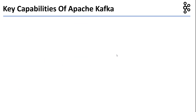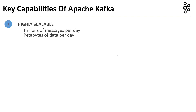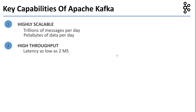Let's look at the key capabilities of Kafka. One, Kafka is highly scalable. Kafka clusters can be scaled to process trillions of messages per day and petabytes of data per day. Two, Kafka is highly performant. Messages can be delivered with latency as low as two milliseconds, which is considered near real time.